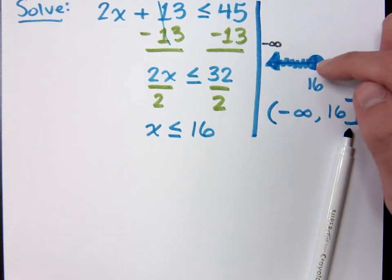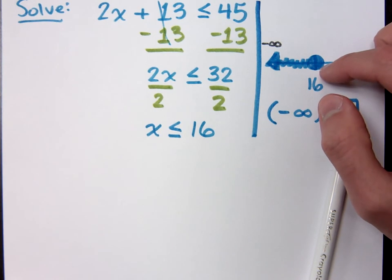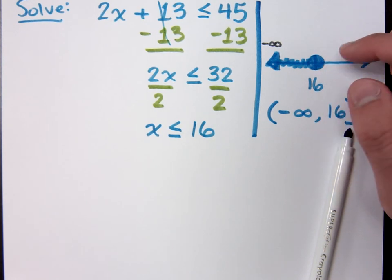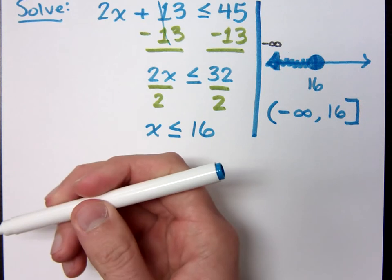Now, remember, this is a closed circle because 16 is included in the solution set. Right. Which is why I'm using a bracket. If I were using an open circle, I'd be using what? Parentheses. Right.